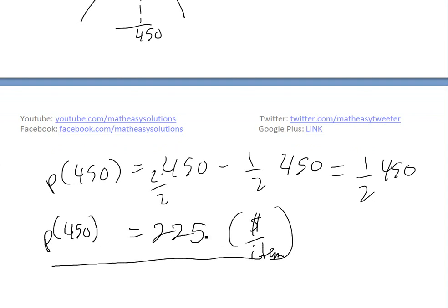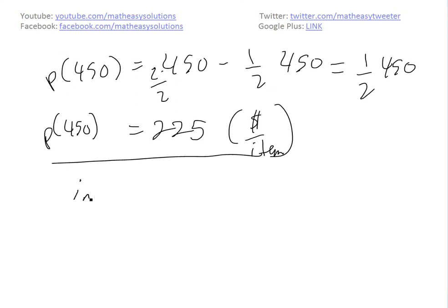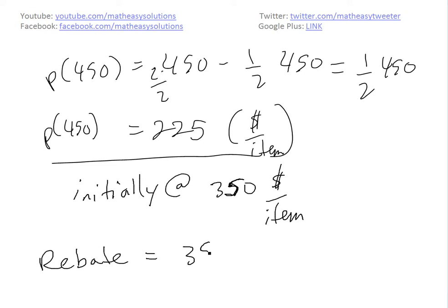But remember, it's decreasing based on your rebate. Initially you're selling at $350 per item. Now you're selling at $225. So the total rebate is this difference: 350 minus 225 equals $125.